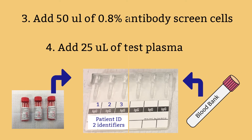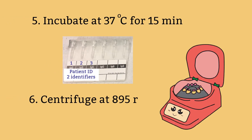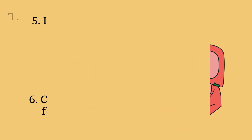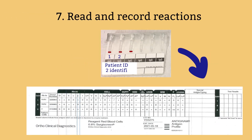Step 4: Add 25 microliters of plasma or serum into each microtube. Step 5: Incubate at 37 degrees Celsius for 15 minutes. Step 6: Centrifuge the gel card. Step 7: Read and record the results.